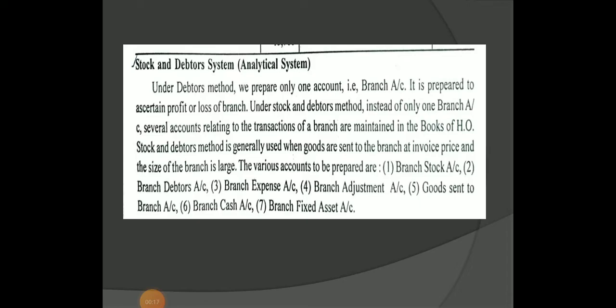In the dependent branch, we are going to calculate two types of accounts. In the first method, we are going to discuss a debtor system. We are going to discuss two types of accounts — the course of a head office and the branch. In the stock and debtor system, we have prepared seven types of accounts.